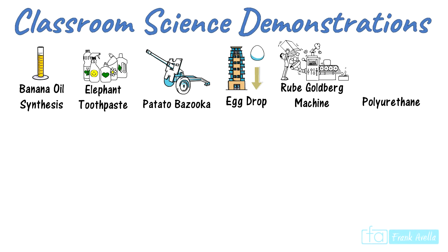The polyurethane foam experiment is often performed in middle school. Mix the two reactants with water — carbon dioxide is produced and makes an enormous amount of foam. The foam eventually hardens and is put on display for students to view.